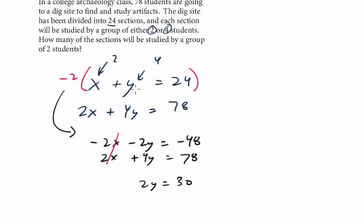Now be careful, remember Y is the number of groups with four, the question is asking for groups of two, so we know that Y equals 15, so here I'm going to rewrite this equation here, it's X plus Y equals 24, we know that Y, the groups with four, is 15, and so the answer for X is 9.